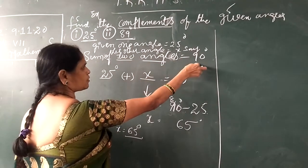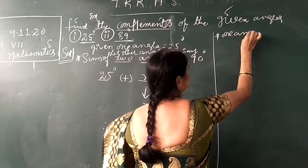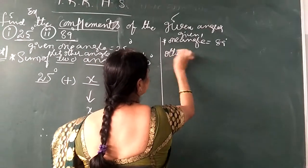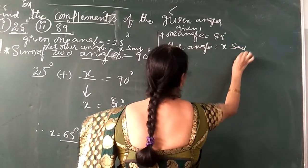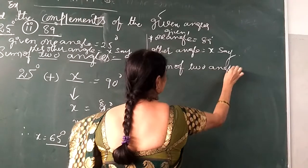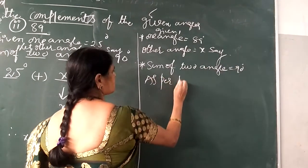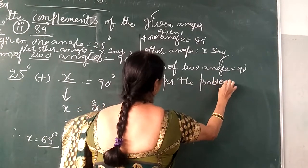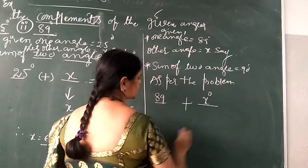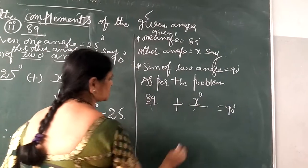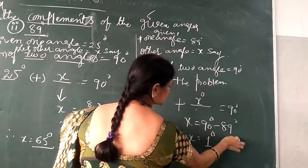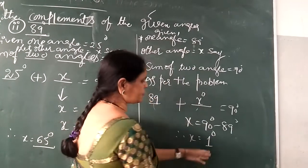Already you know that the sum of two angles is equal to 90. So the first angle is given as 89, you don't know the other angle, and the other angle is equal to x. These two sum to 90 degrees — that is the complementary angle condition. So x is equal to 90 degrees minus 89 degrees. Therefore x is equal to 1 degree. So the complementary angle of 89 degrees is 1 degree, and the complementary of 1 degree is 89 degrees.